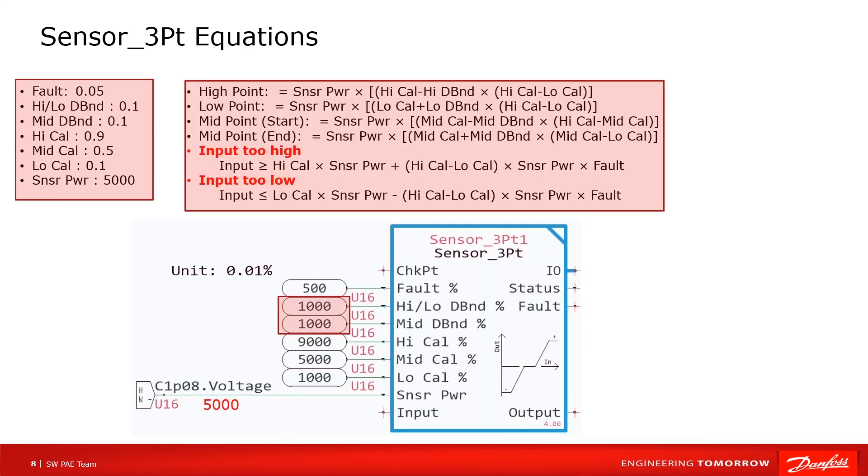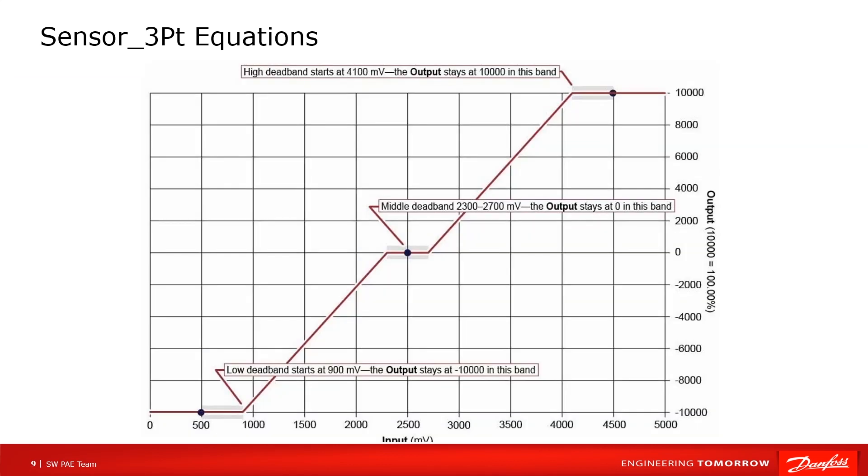Now we set the dead band to 1000 and take it into formulas again. We can get the calculation result. High point is 4100, middle area ranges from 2300 to 2700, low point is 900. Let's check the trace.